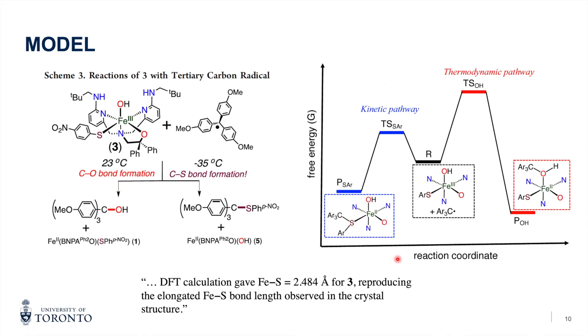So both the crystal structure and their DFT calculation suggest that the iron sulfur bond here is elongated, which is also observed in the IPNS. So they suggest that this long iron sulfur bond lowers kinetic barrier for sulfur transfer, and favors the CS bond product in the cold temperature.